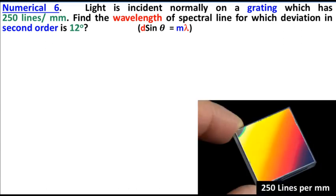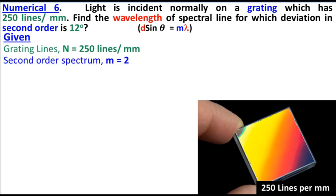So this is our diffraction grating, 250 lines per mm. Given: grating lines N equals 250 lines per mm. This is the number of grating lines. Second order spectrum, m equals 2. Deviation angle theta given at 12 degrees. And wavelength of light lambda, we have to find.